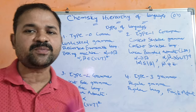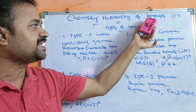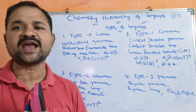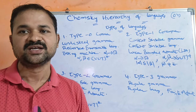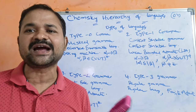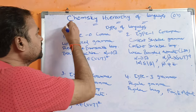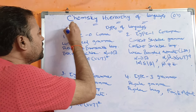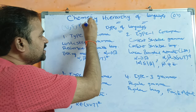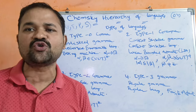Now let us discuss about Chomsky Hierarchy of Languages, or Types of Languages. So mainly the grammar contains 4 tuples: V, T, P, S. Any grammar mainly contains 4 tuples.